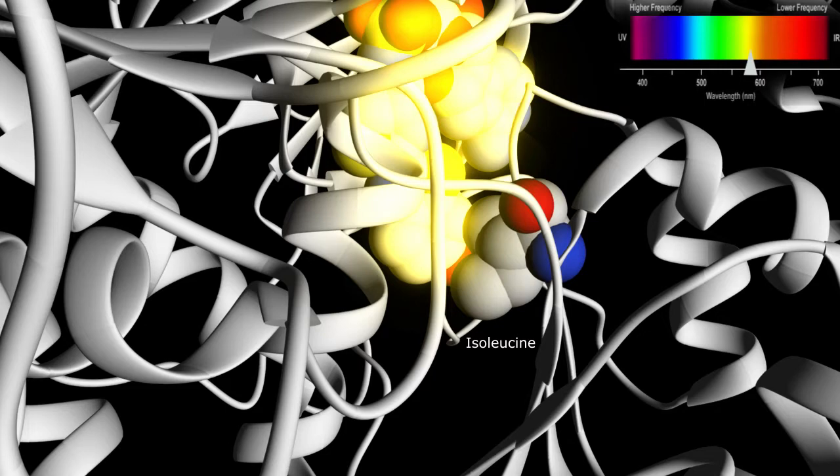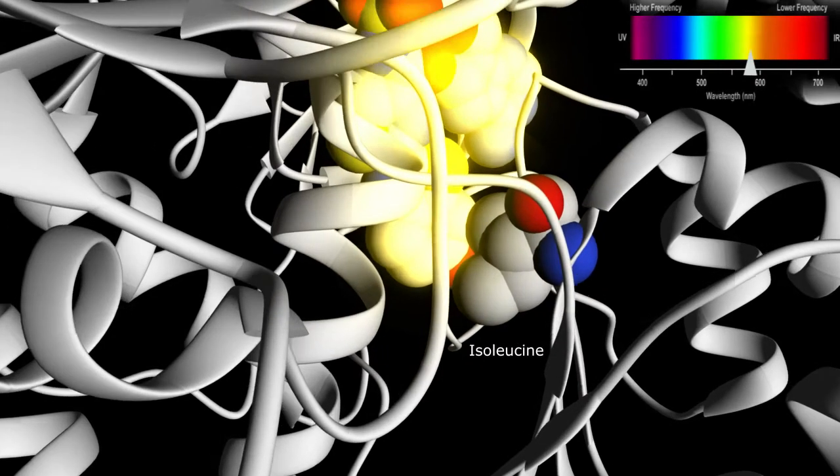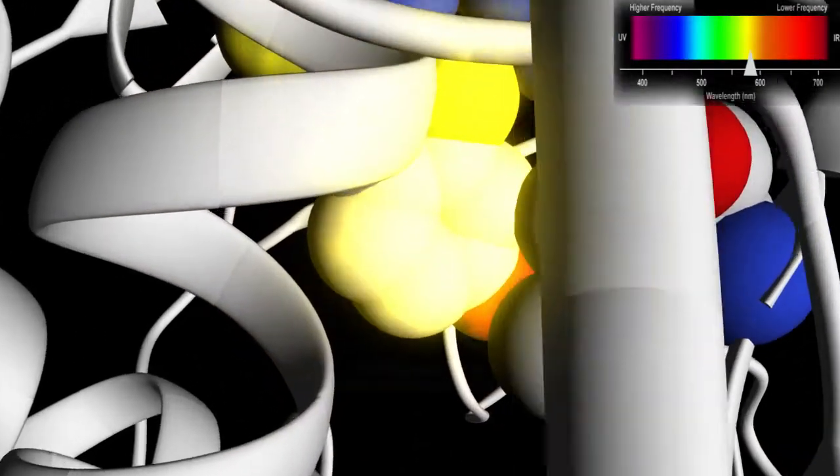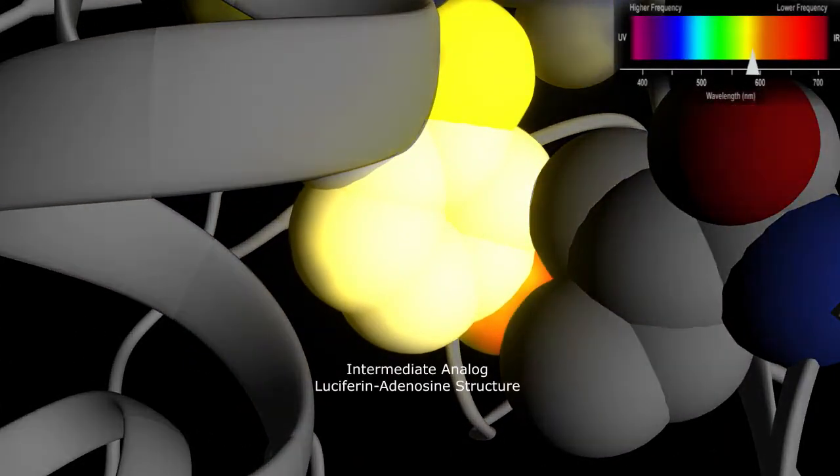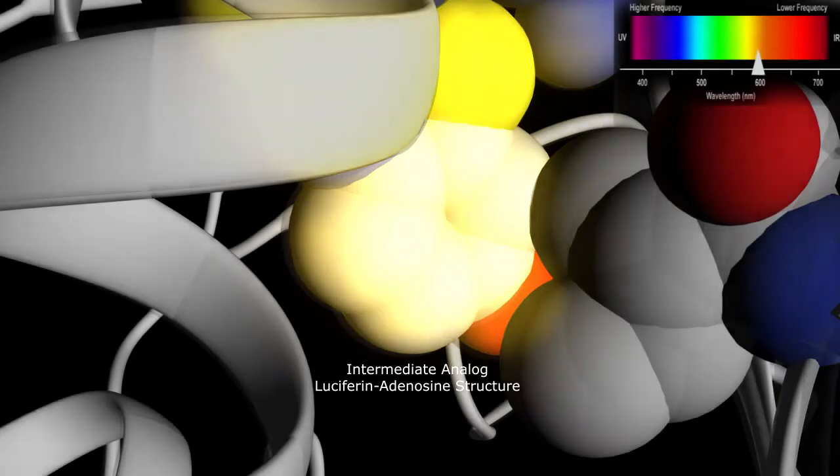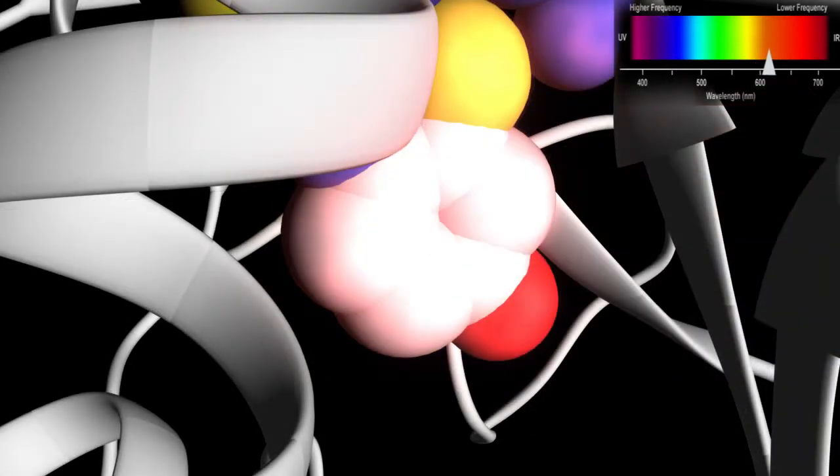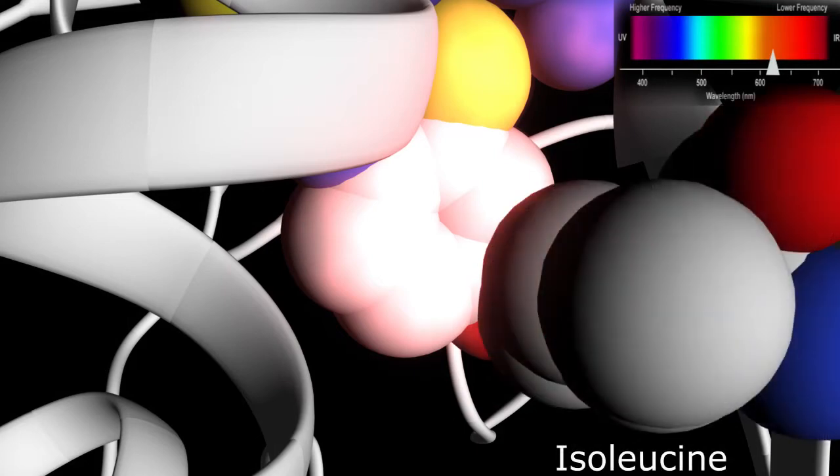The change in orientation of the luciferin dye molecule is due to the movement of the same amino acid, isoleucine. During this change, the side chain of isoleucine is rotated 131 degrees and is also closer to the intermediate analog luciferin adenosine structure. This movement is linked to the switching of a hydrogen bonded network involving the amino acid isoleucine.